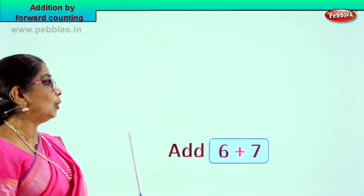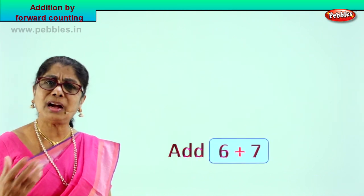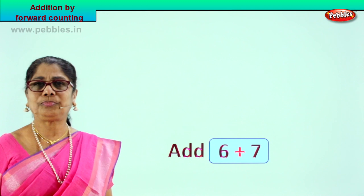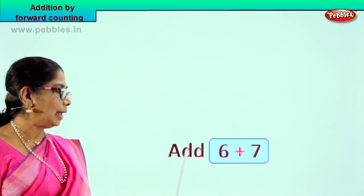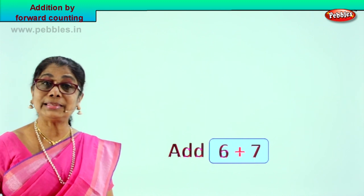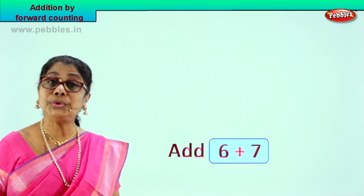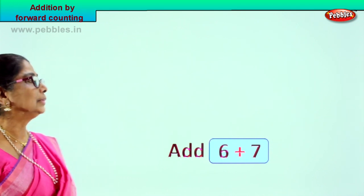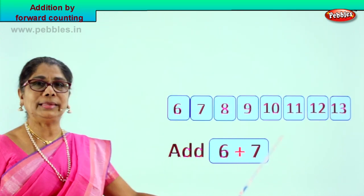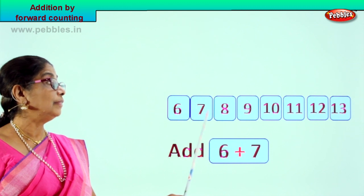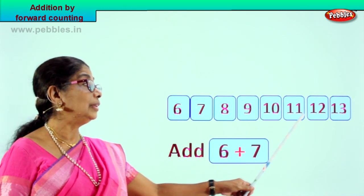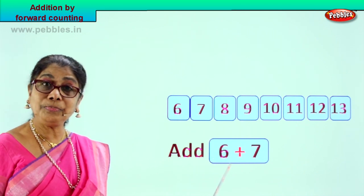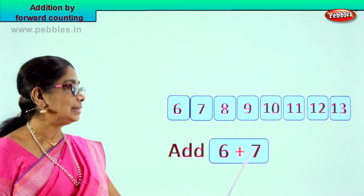Let's look at the first exercise. What we have here is a sum. You have to add 6 plus 7. You are given two numbers and you are supposed to add 6 plus 7. That is the problem given to us. How are we going to do this addition? By forward counting. Look at what numbers you have: 6, 7, 8, 9, 10, 11, 12, 13.